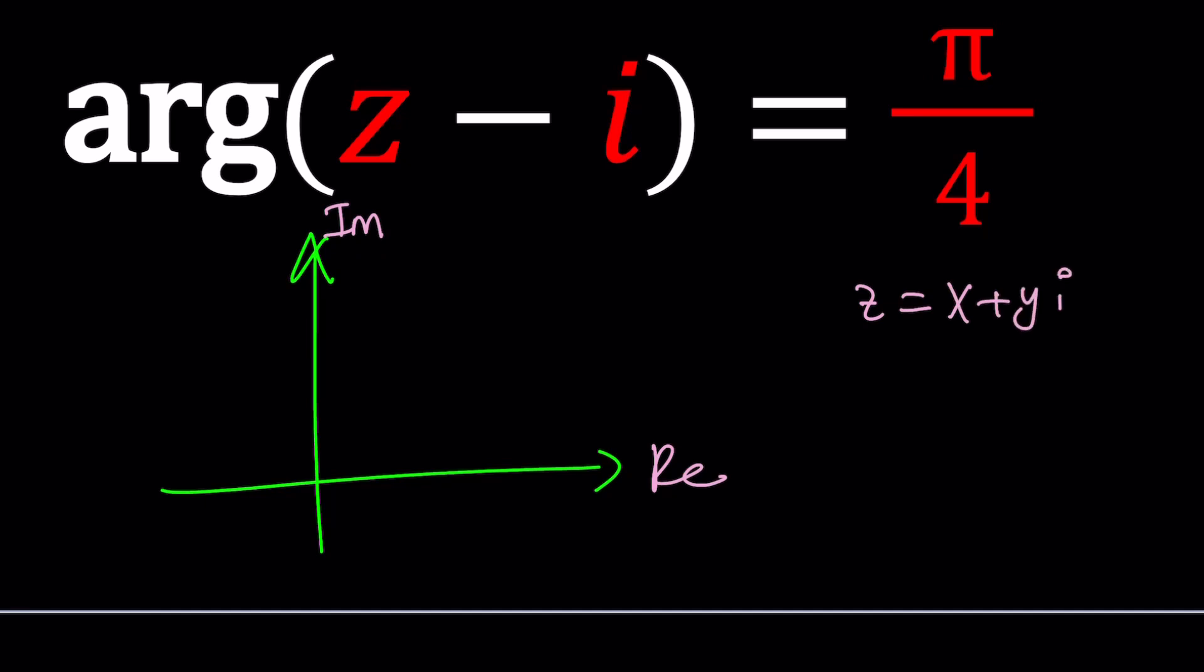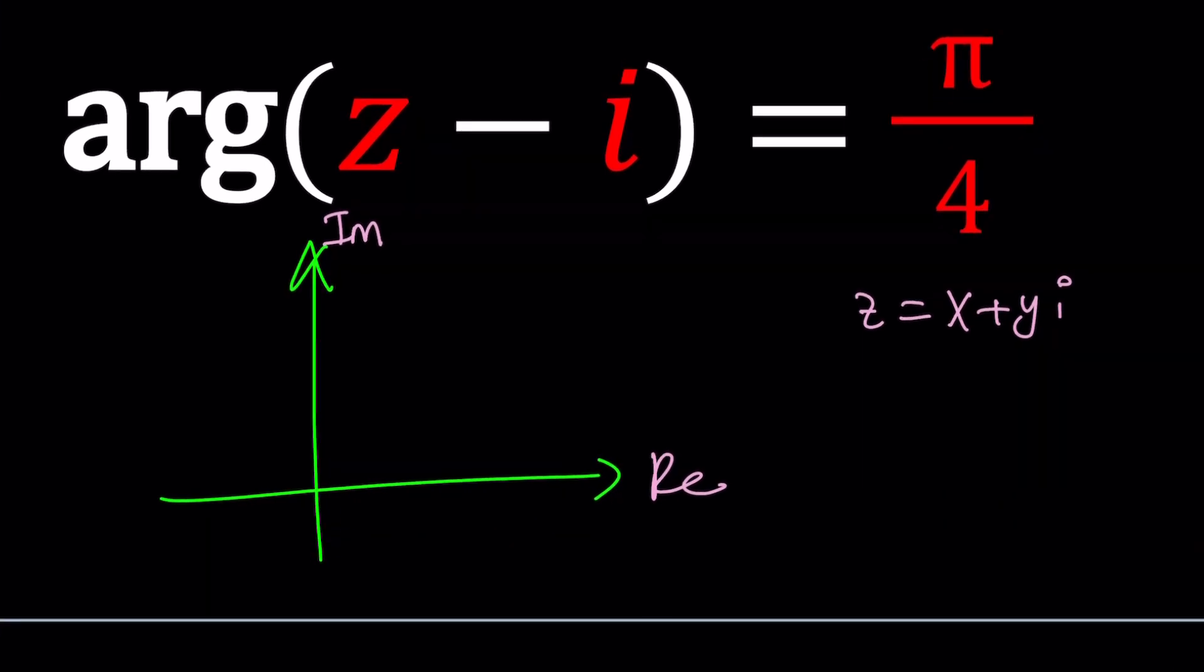If you write it as a plus bi, we're not going to use that in this problem because this is kind of like a locus problem. Again, I'm going to tell you what locus problems are. We would like to use z equals x plus yi.